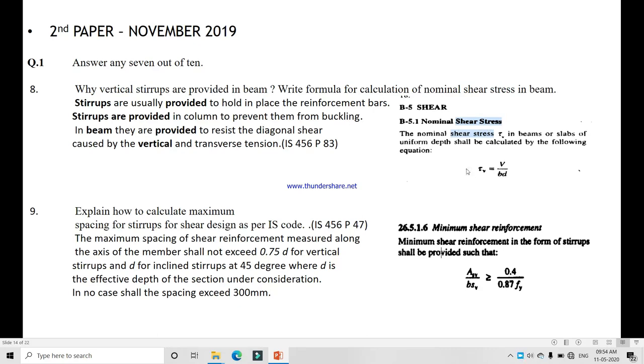They are also provided to resist shear reinforcement and the equation for nominal shear stress is tau v equals Vu upon bd. Next, explain how to calculate the maximum spacing for stirrups for shear design as per IS code. This is given in IS code practice part number 47, and this is the equation for minimum shear reinforcement.